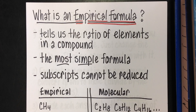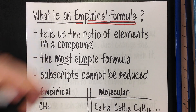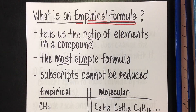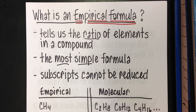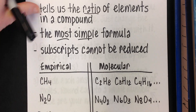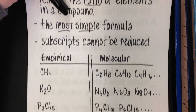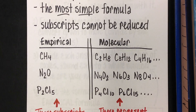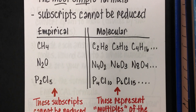An empirical formula is the most simple representation of a chemical formula. It tells us the ratio of elements in a compound — and ratio is a word I really want you to think about. It's a formula where the subscripts cannot be reduced. To help you understand what an empirical formula is, I'm going to compare it to a molecular formula.